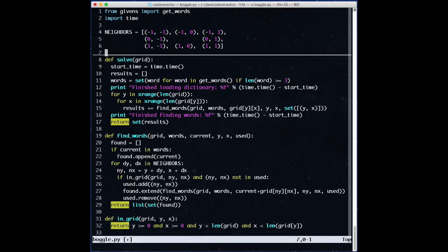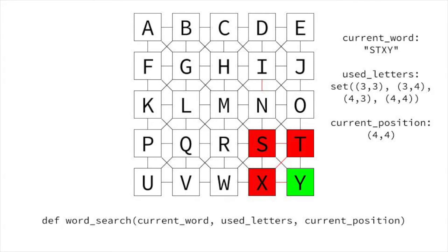How can we improve this? What are we doing that's inefficient? First, we're following many paths that can't possibly be words. For example, STXY can't possibly be a word, and in fact there aren't any words that begin with STX — we should be able to stop at that point. We want to say: we can't make a word that starts with STX, let's abort. This becomes a new base case for us, and there are a few ways to do it. Brute force is to check every word in the dictionary for something that starts with our prefix. We can do much better than that. Another way would be to do a binary search on a sorted version of the dictionary, but there are two ways to do it in O(S) time.